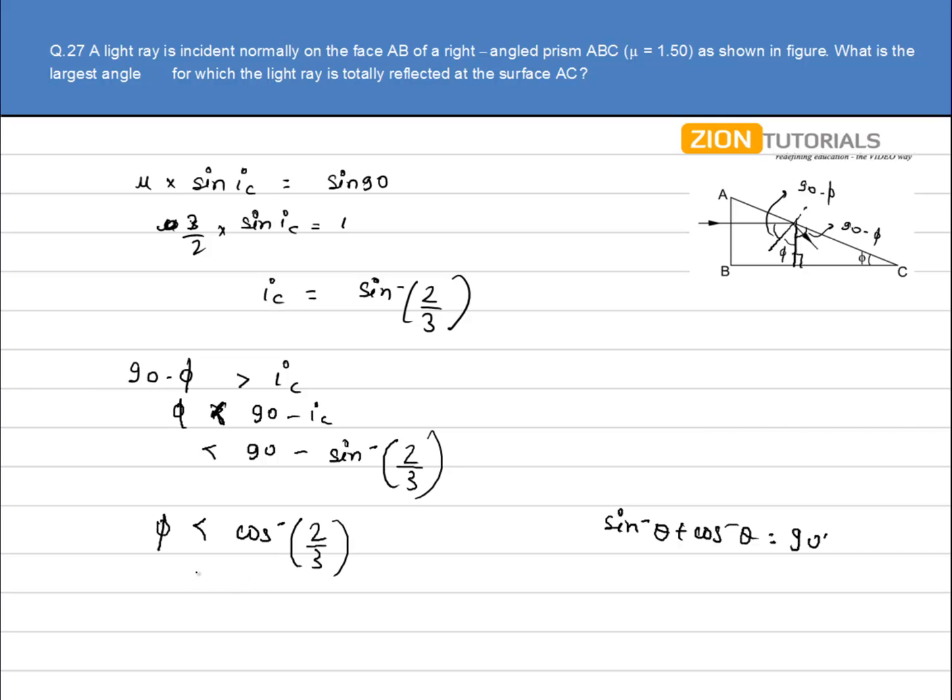Therefore, the maximum or largest angle possible for phi is cos inverse of 2/3, for which the ray will be totally reflected. That is the answer.